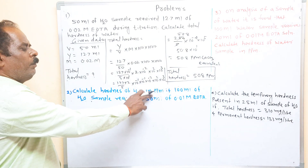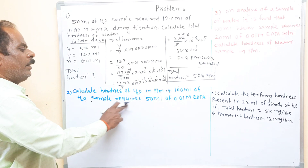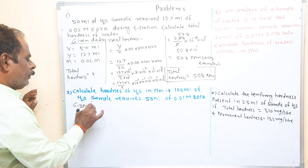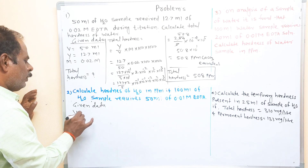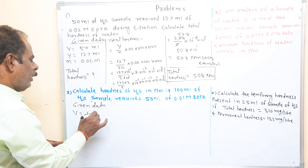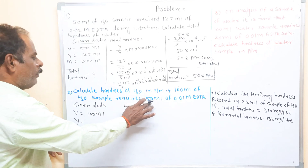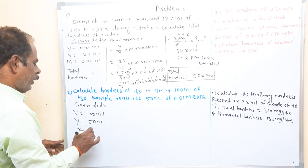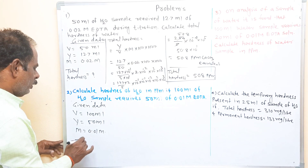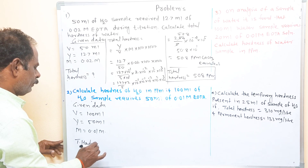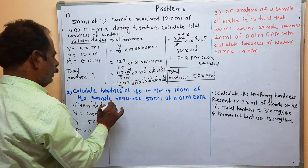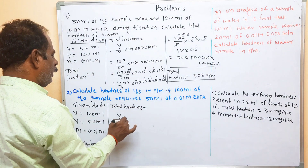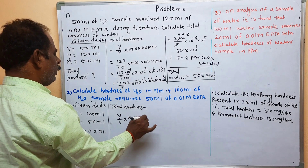Calculate the hardness of water in ppm if 100 ml of water sample requires 50 ml of 0.01 M EDTA. Write the given data: V means volume of sample = 100 ml, Y means volume of EDTA = 50 ml, and molarity of EDTA M = 0.01 molar. Calculate the total hardness.